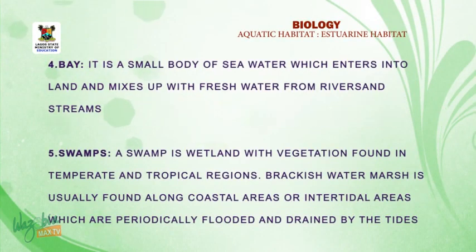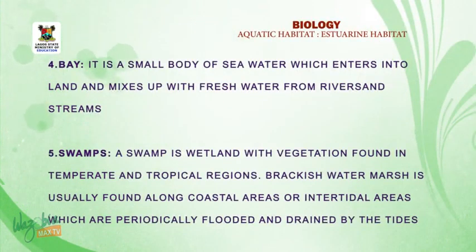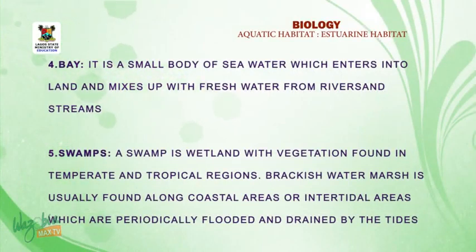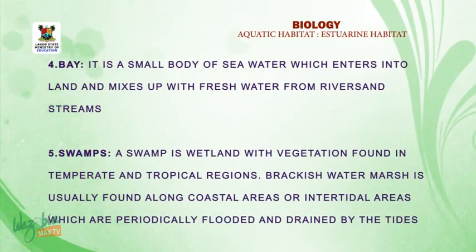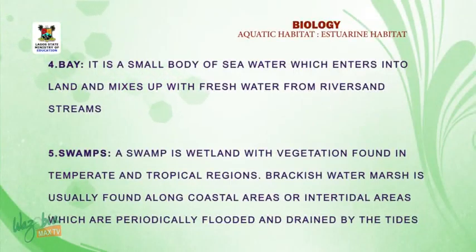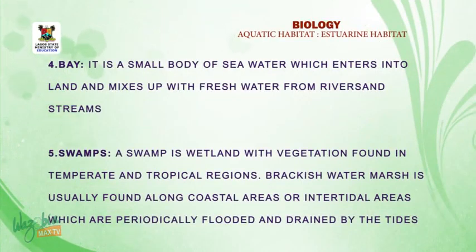Number four: bay. A bay is a small body of water which enters into land and mixes with fresh water from rivers and streams — a small portion of sea water that enters into land and mixes with fresh water. Number five: swamp. A swamp is a wetland with vegetation found in temperate and tropical regions. Brackish water marsh is usually found along coastal or intertidal areas which are periodically flooded and drained by the tides.